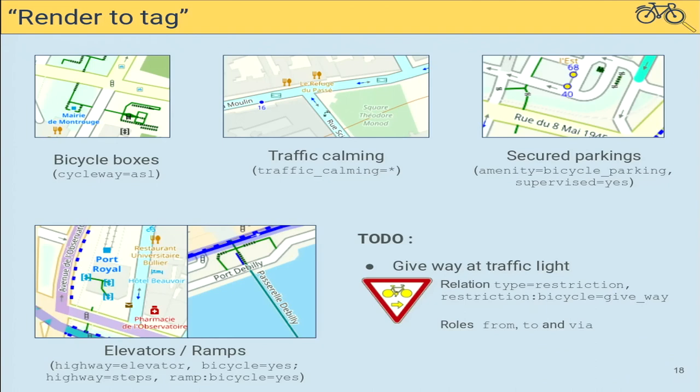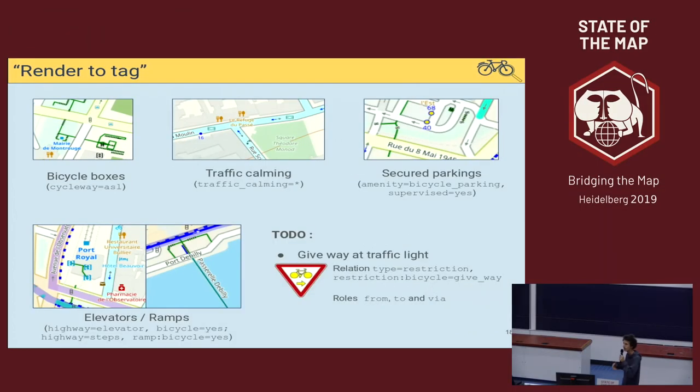Our next goal is to render the give-way-at-red-light sign, which is a French regulation allowing bikes to pass at a red light with a give-way restriction. This is represented by a quite complicated scheme using a relation, and it's often not added or incomplete in French data. We'd like to render it first for cyclists to see it, and then to encourage users to add it in a visual way.